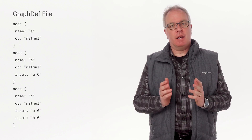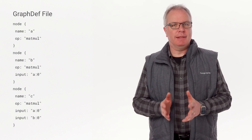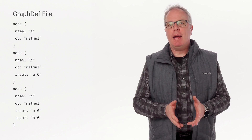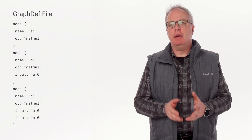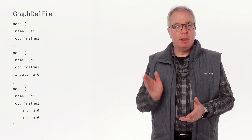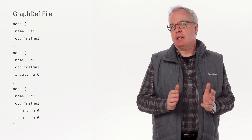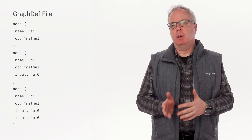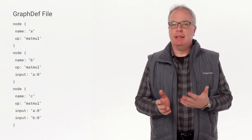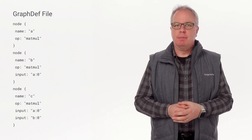Either way, it's the heart of your model data. It contains a description of your graph in a way that can be read by another process. For example, this model defines the operations of multiplying matrices A and B together to get C.